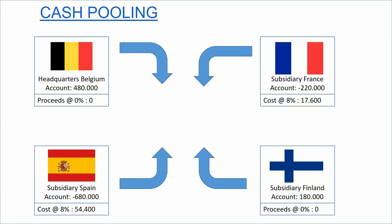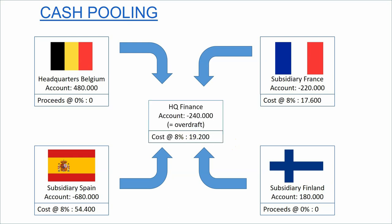In cash pooling, all these entities centralize their accounts in a cash pooling entity. When you add up all the different accounts, you have an overdraft of only 240,000 euro. Applying the 8% cost gives a total cost of 19,200 euro, which is obviously lower than the combined costs of the Spanish and French subsidiaries. So by pooling all the cash of the group, the company can reduce the cost of overdrafts.